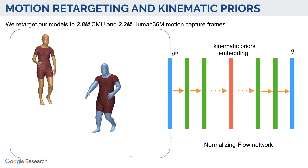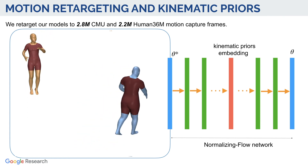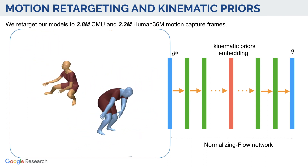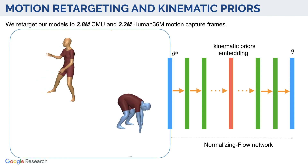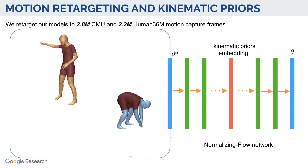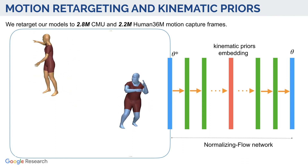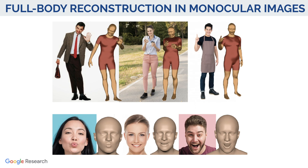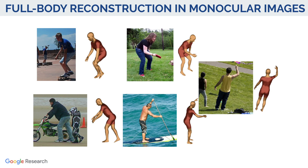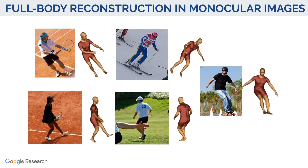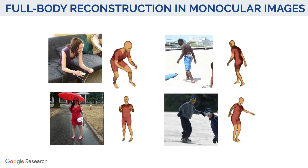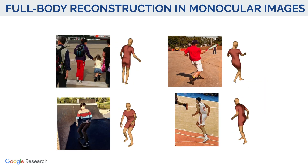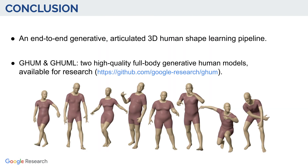We construct kinematic priors based on normalizing flow by retargeting GAM and GAMLight to millions of samples of 3D motion capture data. We also illustrate 3D human pose and shape reconstruction from images, where we simultaneously estimate facial expressions as well as full-body pose and hand detail. The model parameters are optimized based on a loss combining 2D key points and semantic body part alignment.